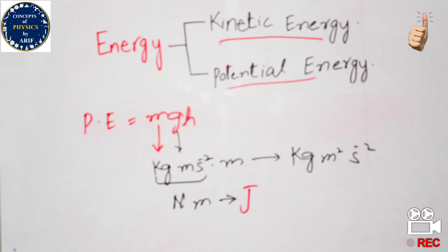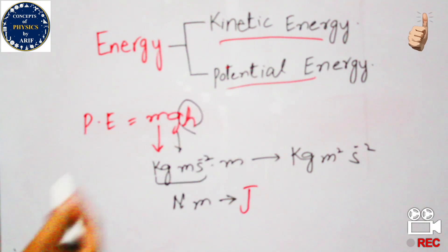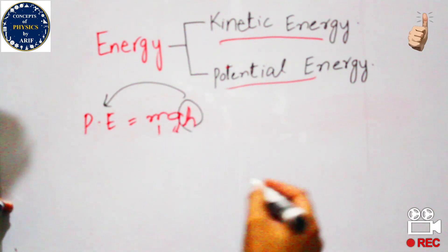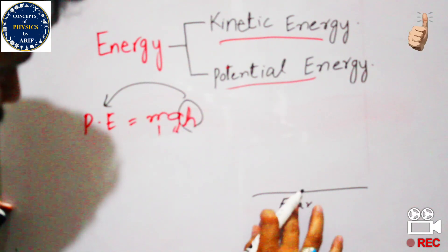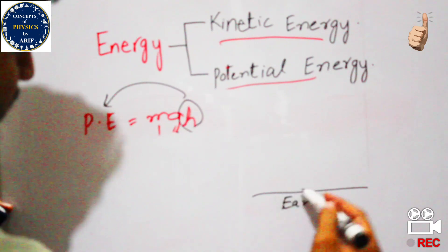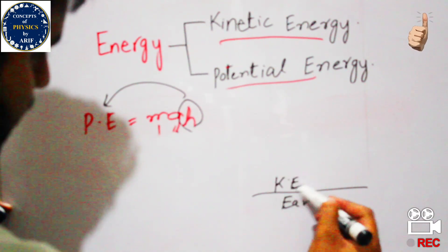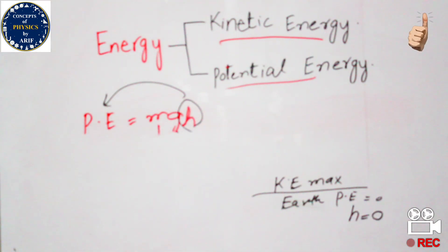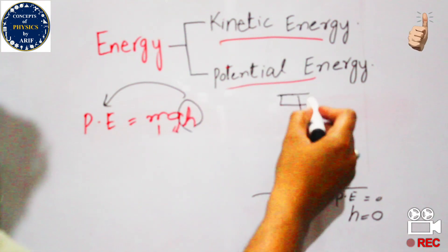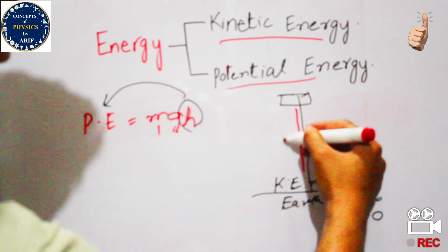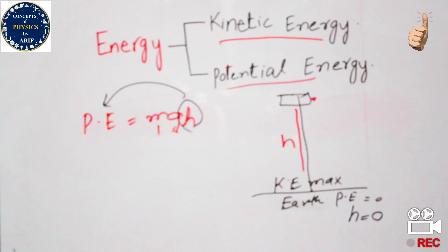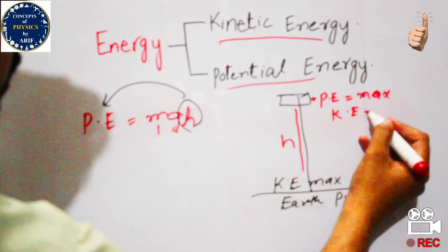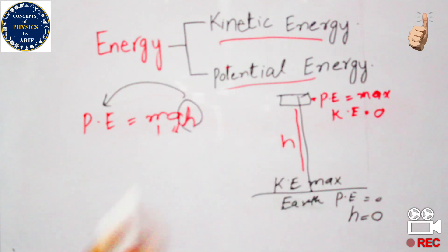Consider a case: on the surface of the earth, height equals zero, so potential energy equals zero, but kinetic energy can be maximum. At a certain height, the body has gained height, so potential energy may be maximum, but kinetic energy equals zero because the body is not moving and its velocity is zero.